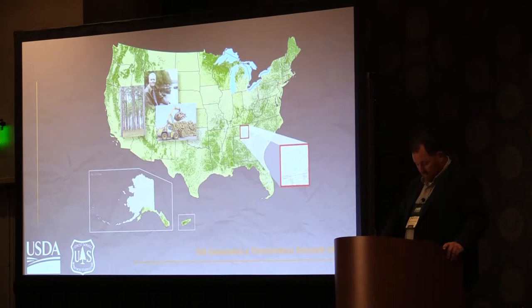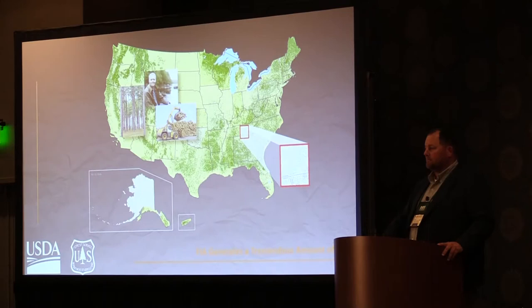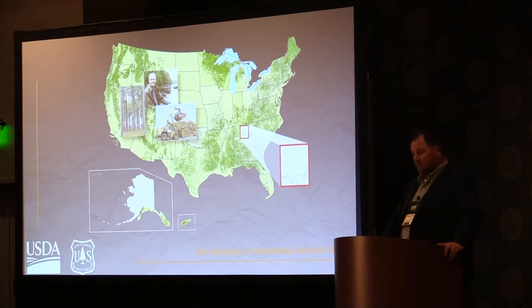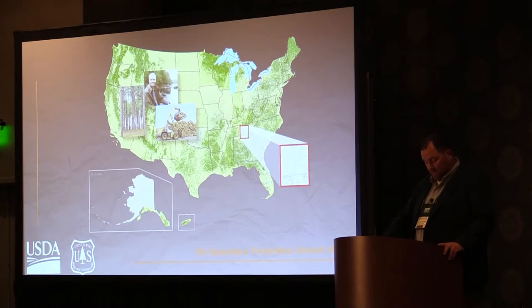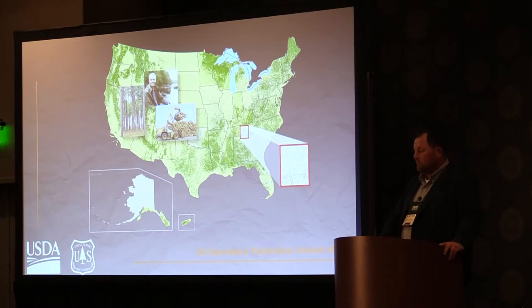The FIA program generates a tremendous amount of data. There are three different themes. We have a National Woodland Owners Survey — a survey of the nation's forest landowners. We also gain understanding by visiting the primary wood-using facilities of the nation for forest products and utilization of the resource. There's also a network of plots distributed across the nation that we visit and revisit to report on the status and condition of the nation's forests.